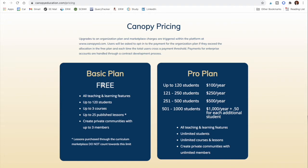On the basic free plan, you can create up to three courses of 25 published lessons each — so there are three courses you can create and sell free of charge through Canopy.